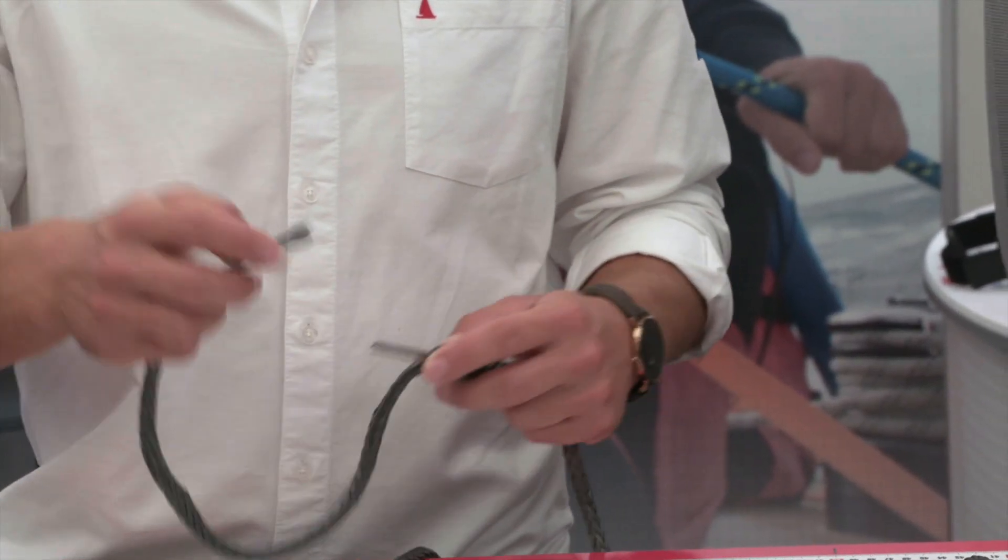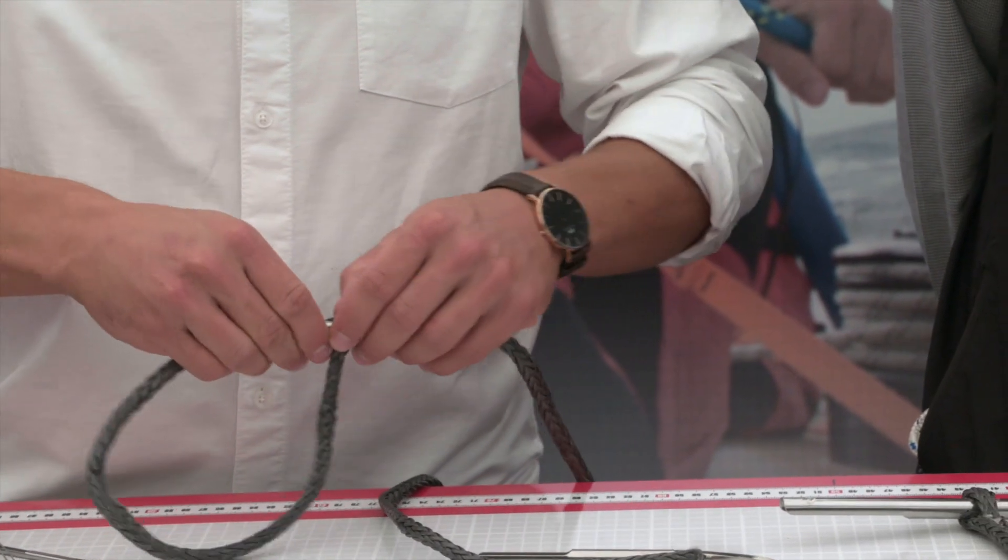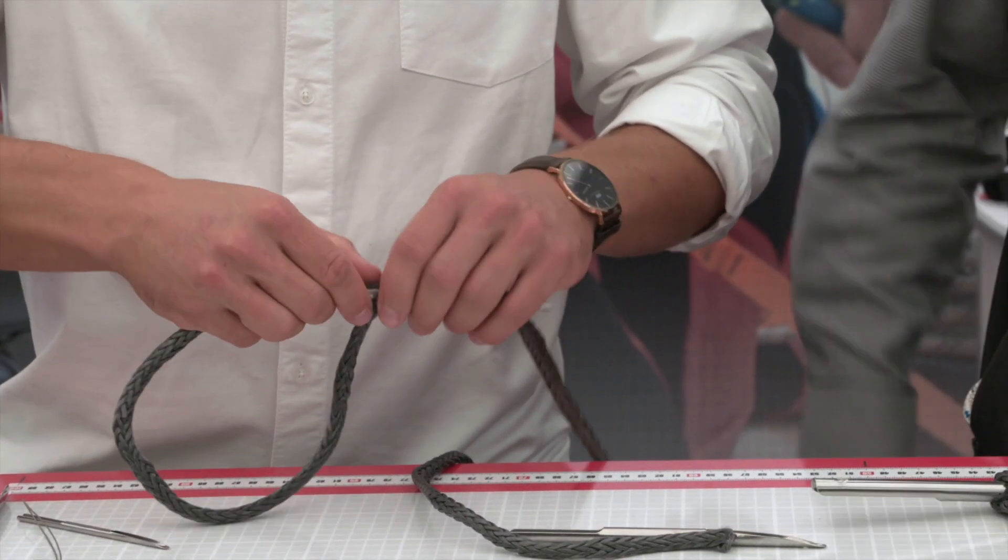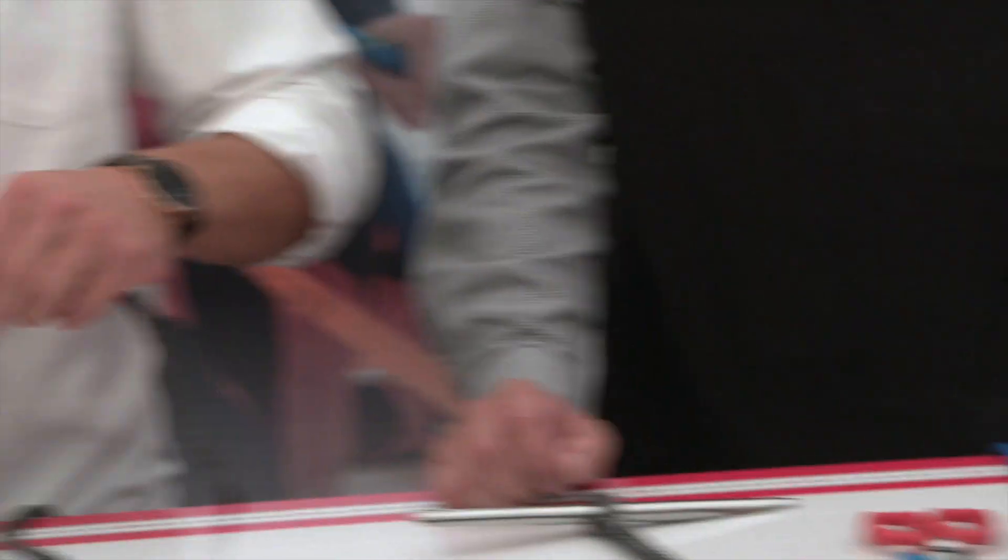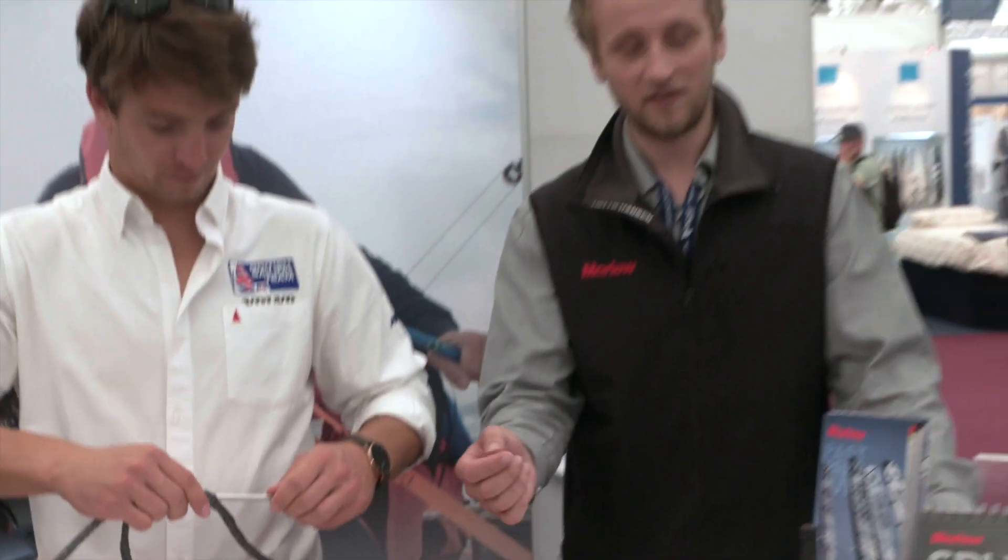And so you can use it for halyards or sheets or the tack line of the spinnaker, so that when you de-rig the spinnaker each evening, you don't have to completely untie your ropes. It can significantly reduce the wear and tear on your sailing equipment as well. At points where you'd have shackles rubbing against your deck or your sails, this is going to be a much softer and kinder alternative to your equipment.